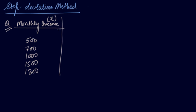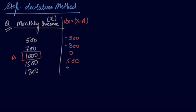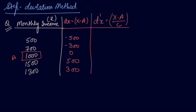Let's take this question where monthly income is given in rupees. I am taking assumed mean as 1000. Taking deviations x minus 1000: we get −500, 0, 500, and so on. Then in step deviation, we divide by the common factor. The common factor here is 100, giving step deviations of −5, −3, 0, 5, and 3. Adding these gives Σd'x = 0.